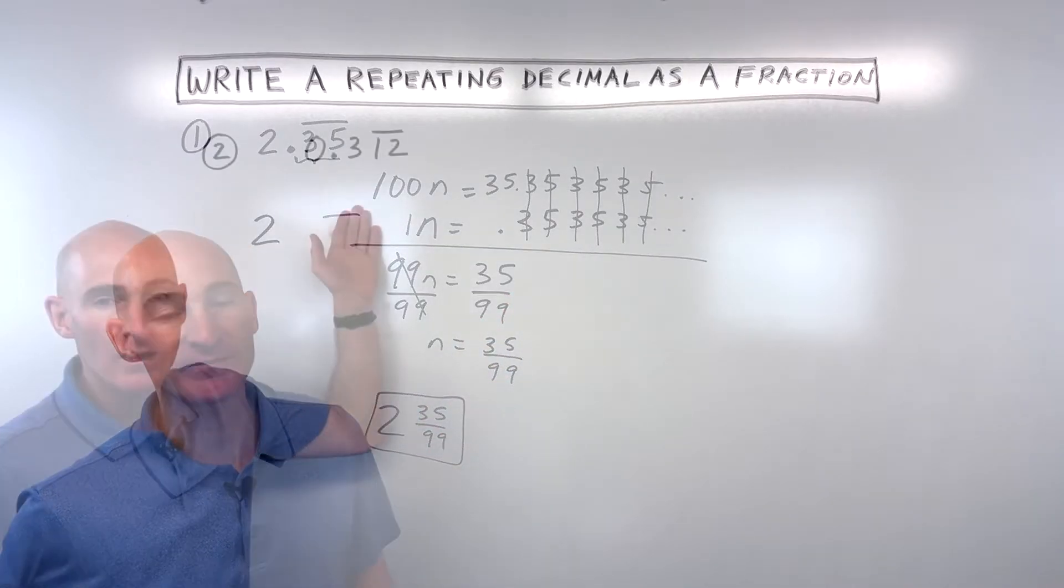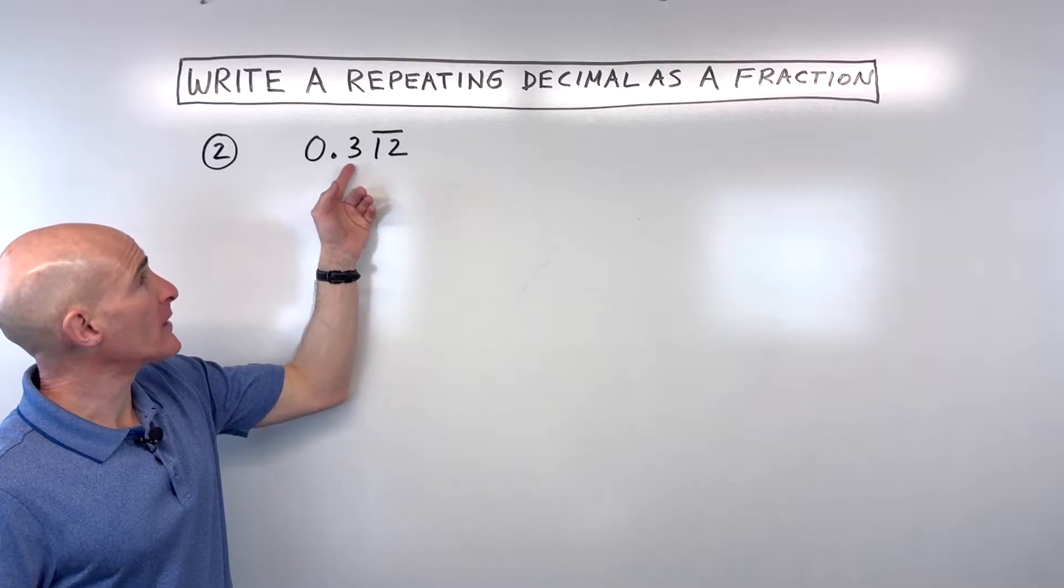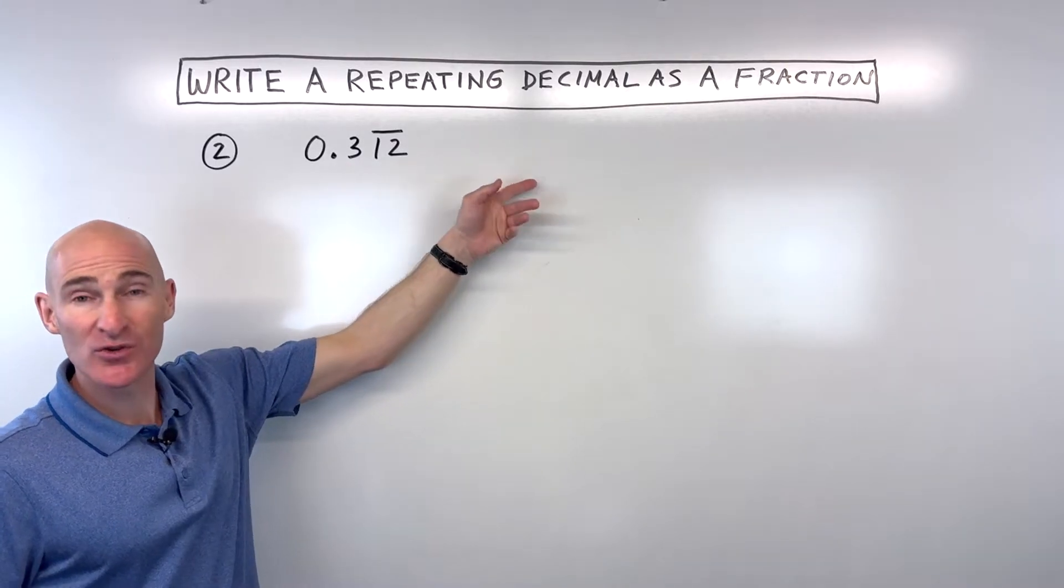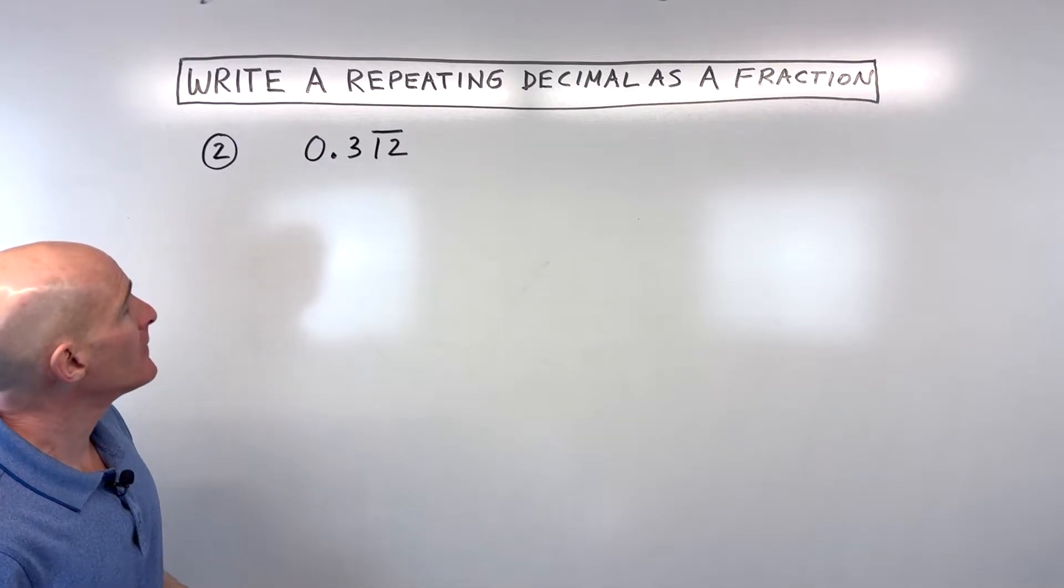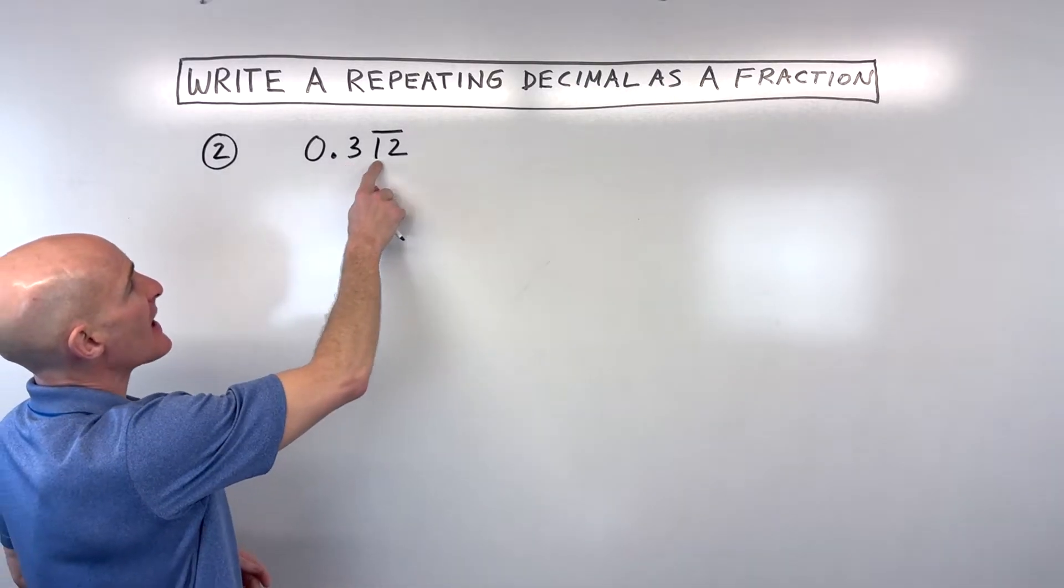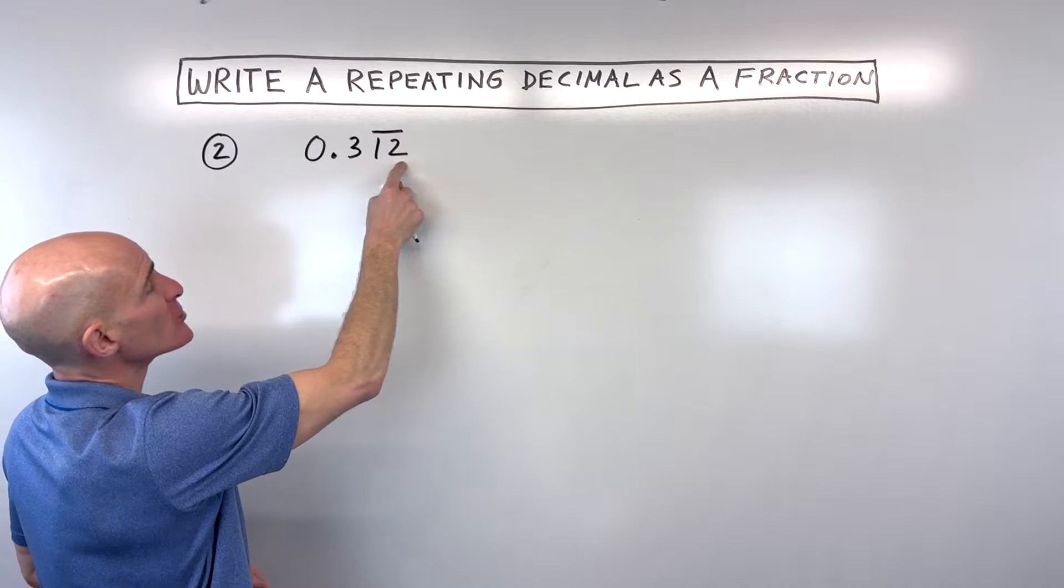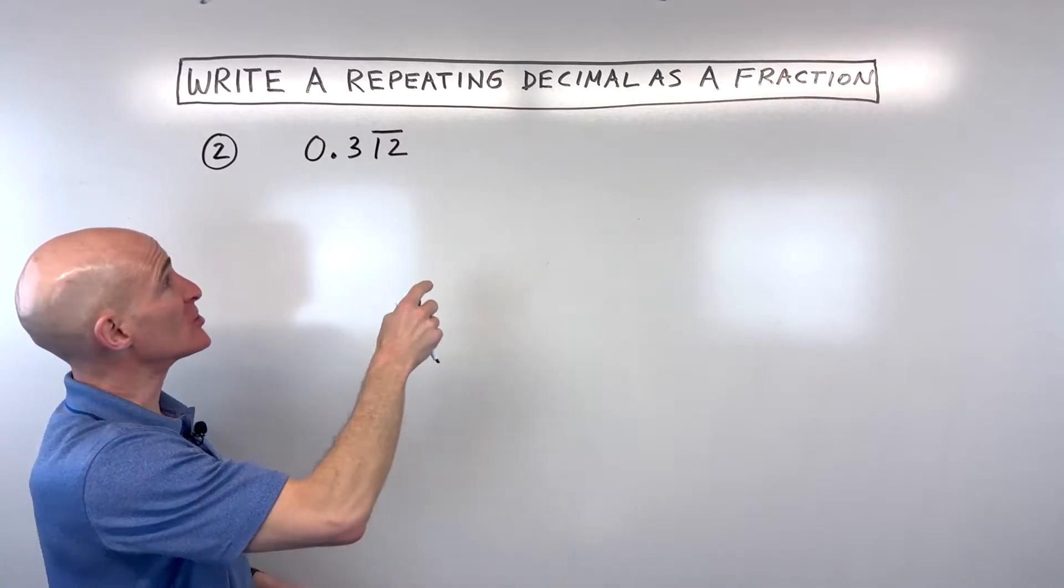So let's take a look at another example. So we have 0.312121212. We want to write this as a fraction. So how do we do that? Well, what's interesting here is it's not like it's 312 repeating, like 312, 312. It's just this 12.